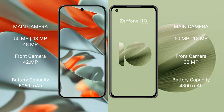The Google Pixel 9 Pro XL features a rear triple camera setup: 50MP plus 48MP plus 48MP, and a 42MP front camera. The Asus Zenfone 10 features a rear dual camera setup: 50MP plus 13MP, and a 32MP front camera.